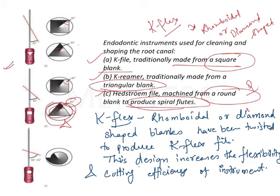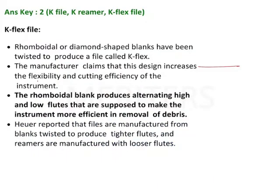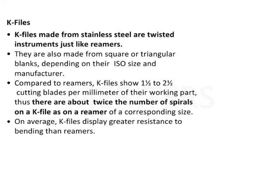K flex is made from a rhomboidal blank, and this design increases the flexibility and cutting efficiency of the instrument. The alternating high and low flutes in K flex increase cutting efficiency, making it more efficient in removal of debris. K flex is a diamond-shaped blank twisted to produce what is called the K flex file. K files are made from stainless steel twisted instruments, just like reamers, and there are about twice the number of spirals on a K file as on a reamer of corresponding size.